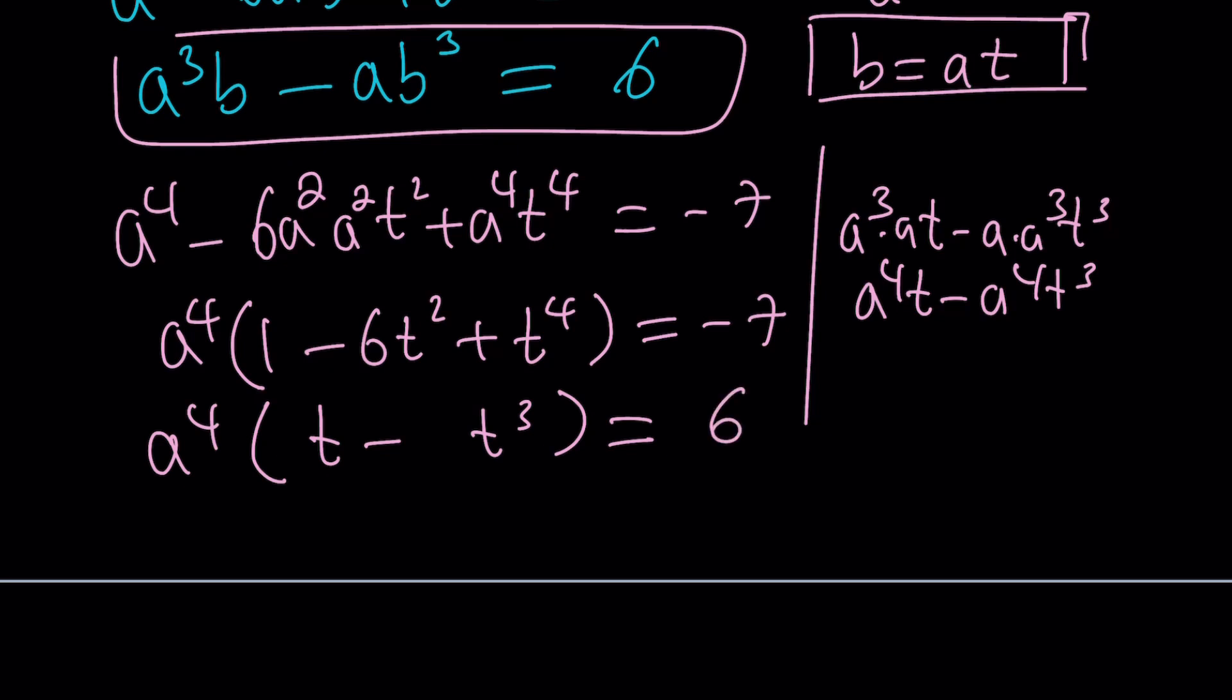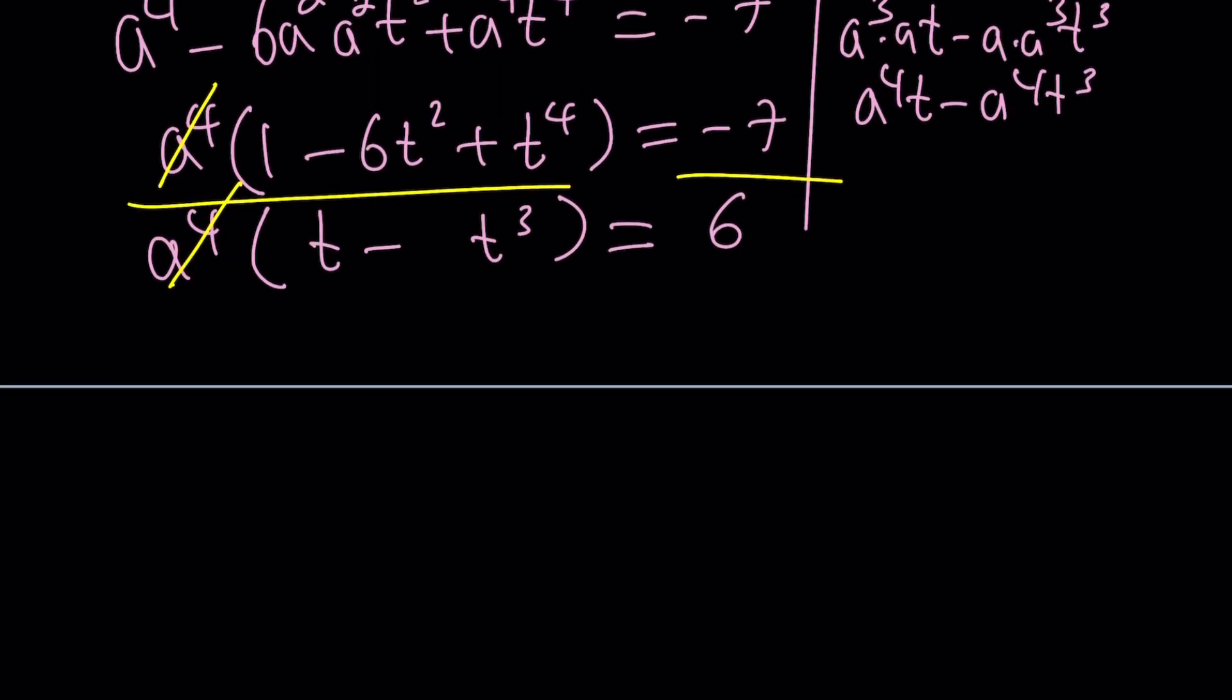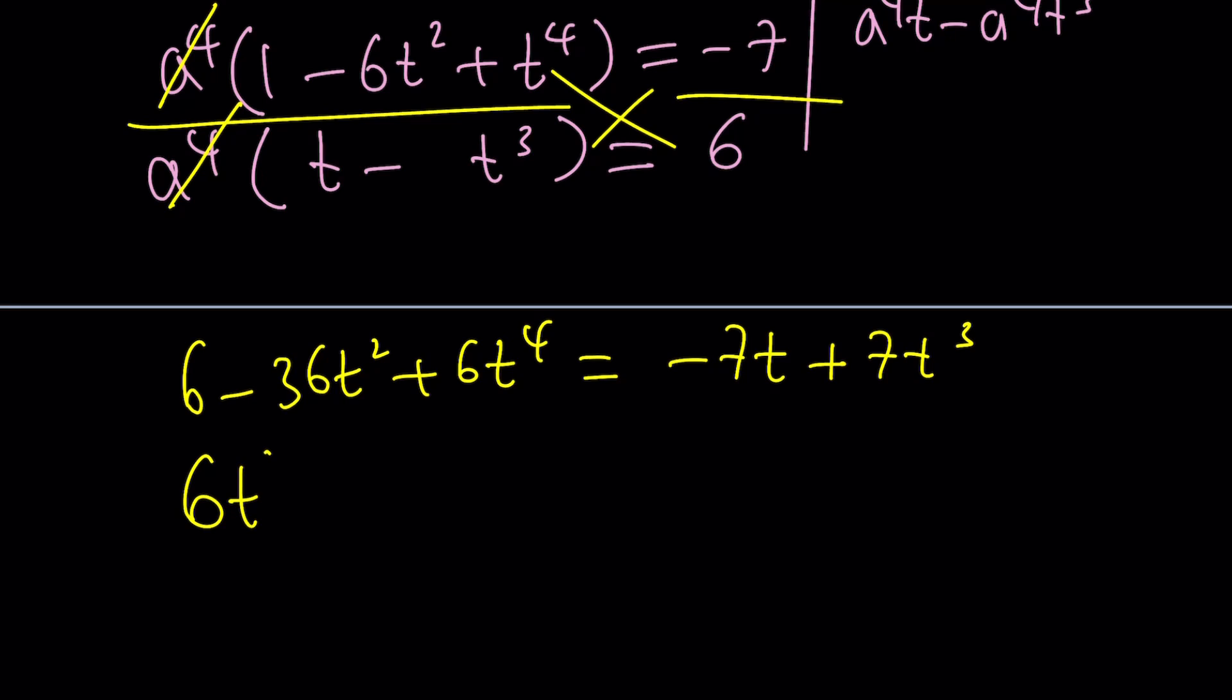Now we've got a nicer system, and we can actually divide these side by side because that's when the A to the fourth cancels out. Great. And then cross-multiply like this. You're going to get 6 minus 36T squared plus 6T to the fourth equals negative 7T plus 7T cubed. Put everything on the same side.